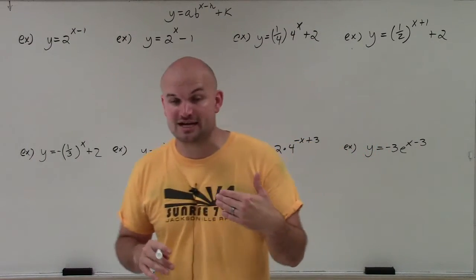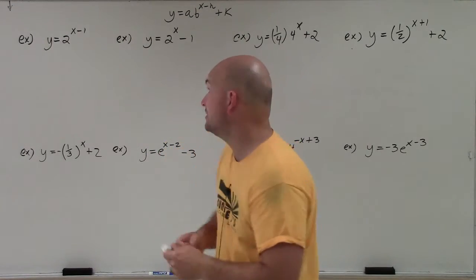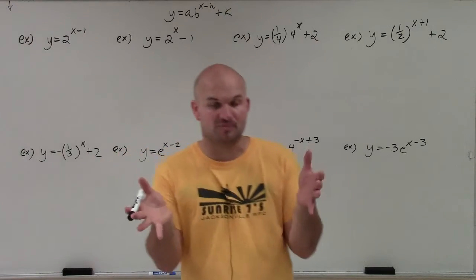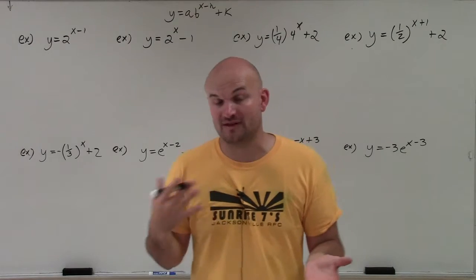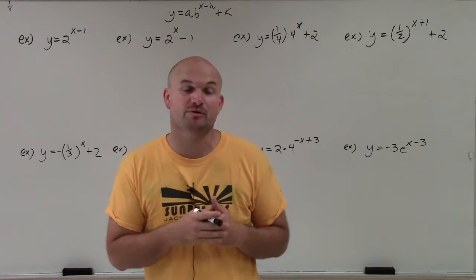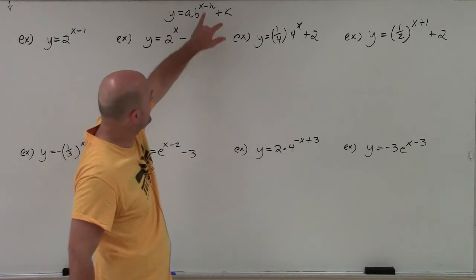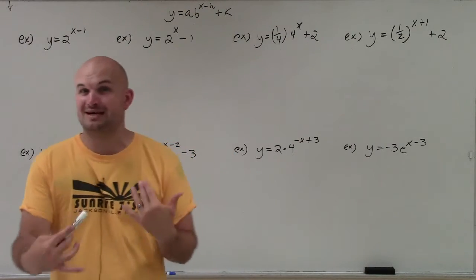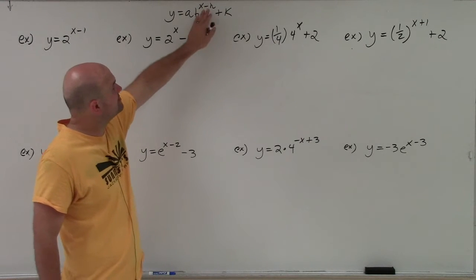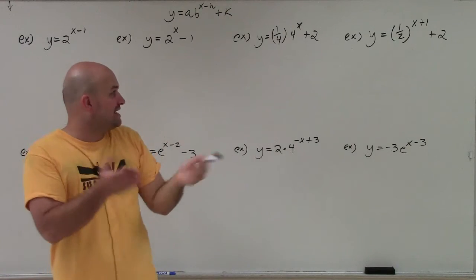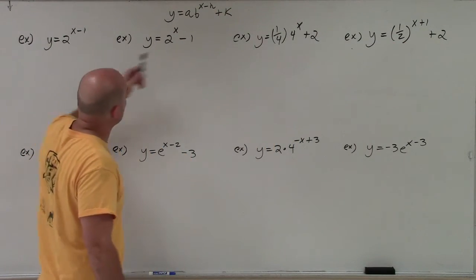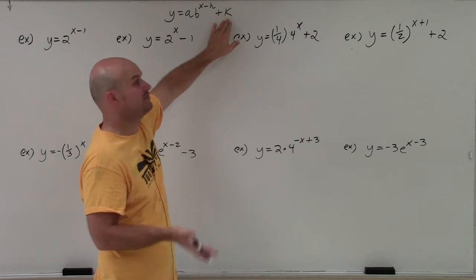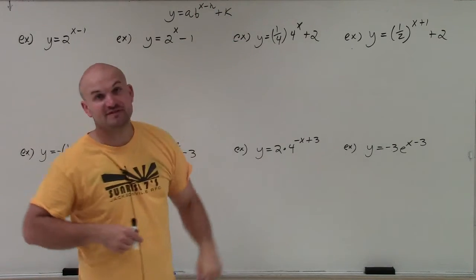Now we're going to get into transformations which include translations — shifting the graph up or down. We'll still have reflections; a negative on the outside reflects over the x-axis, and a negative inside the function reflects over the y-axis. As far as translations go, we're now adding an h and a k, same as we did for quadratics, absolute value, and radical expressions. h is subtracted inside the function and causes a left or right shift; k is added outside and causes an up or down shift.